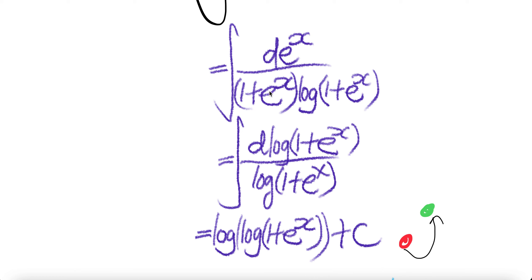Notice that 1 over (1 plus e to the power x) times the derivative of e to the power x equals d of log(1 plus e to the power x), because the derivative of this is 1 over this times the derivative of this, which is d e to the power x. So this thing is the same thing as that.